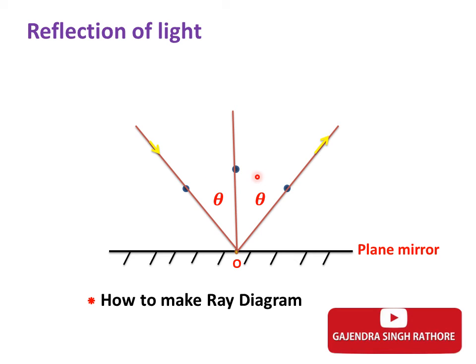This is our incident ray. This is our reflected ray. And this one is normal. The angle between incident ray and normal is angle of incidence. And the angle between reflected ray and normal is our angle of reflection.